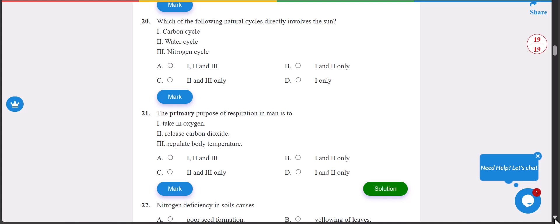Number 20: which of the following natural cycles directly involve the sun? We have carbon cycle, water cycle, nitrogen cycle. The answer is B, I and II.